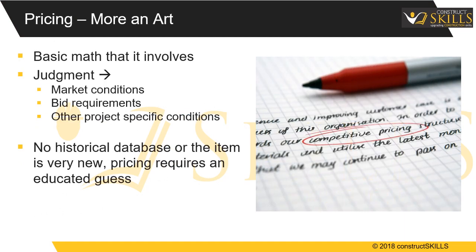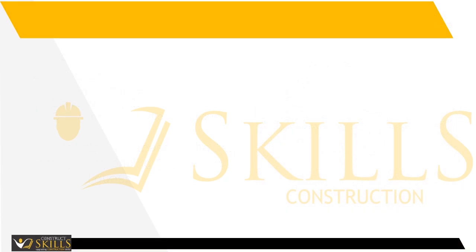Pricing — more an art. Beyond the basic math it involves, pricing is always an art. The estimator has to make judgments based on market conditions, bid requirements, and other project-specific conditions. When there is no historical database or the item is very new, pricing requires an educated guess. Pricing for new construction may differ from renovation work. Estimating will always require at least some percentage of subjectivity and can never be fully automated. Therefore, estimating will always be a combination of both art and science.